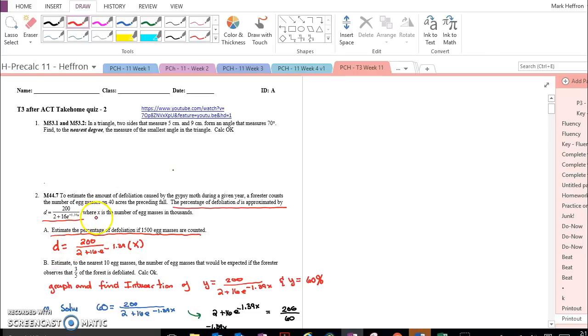And then it says where X is the egg masses in thousands. So X, if you say X equals 1, that's 1,000 eggs. So that means for part A, you've been asked for...